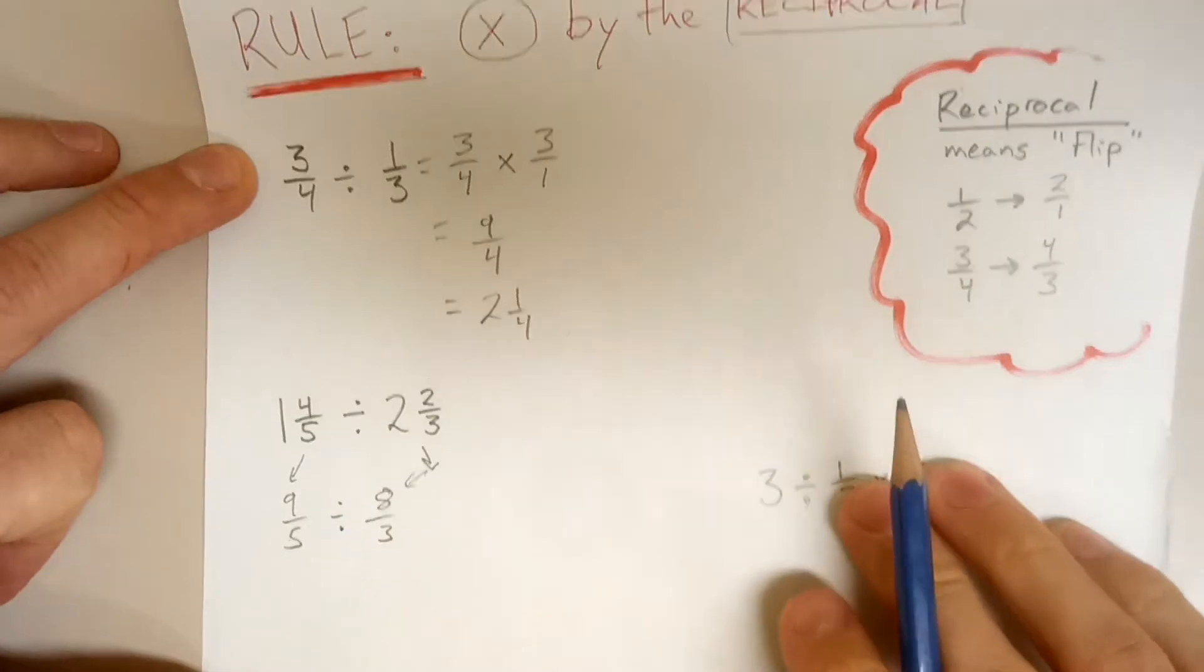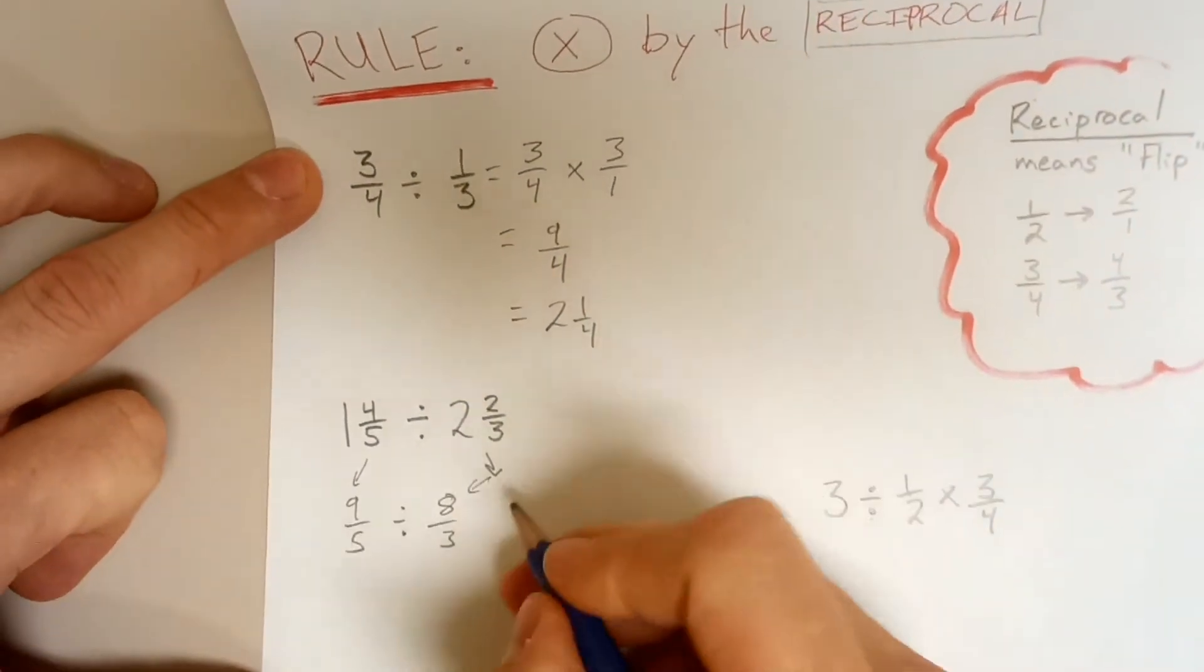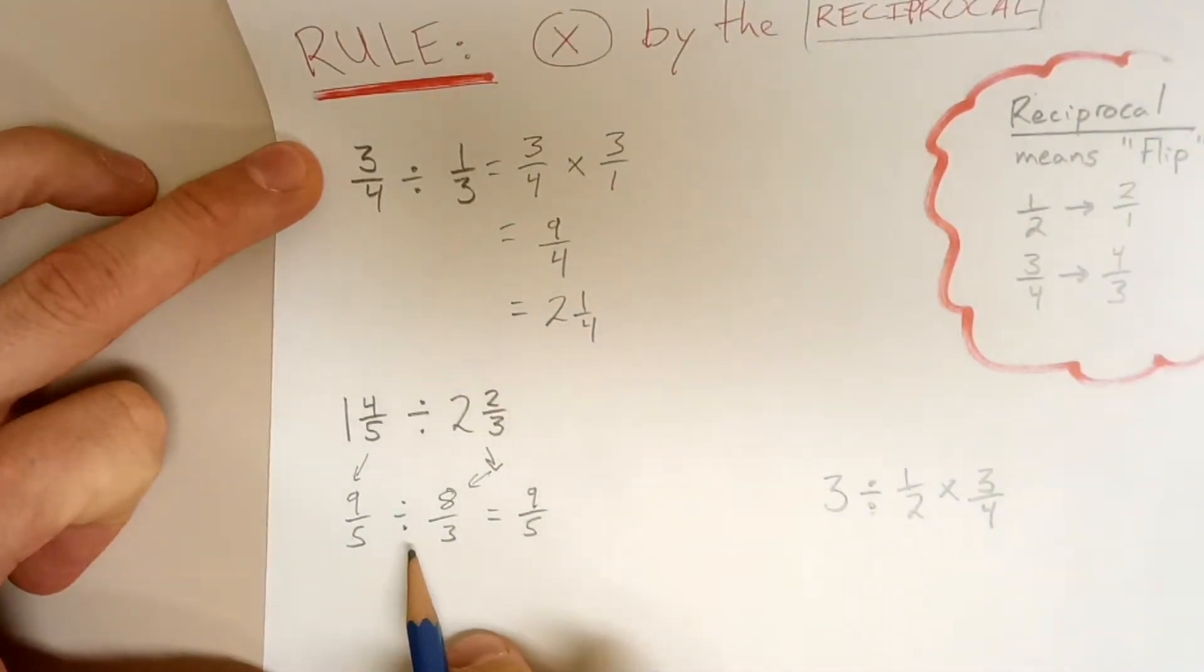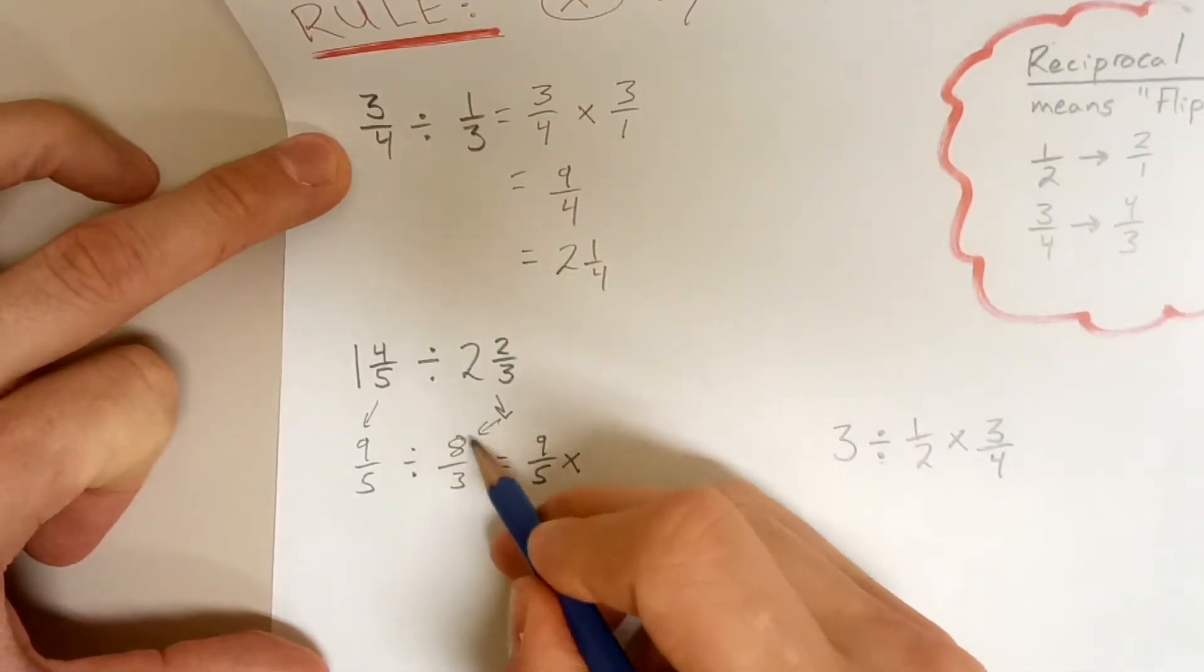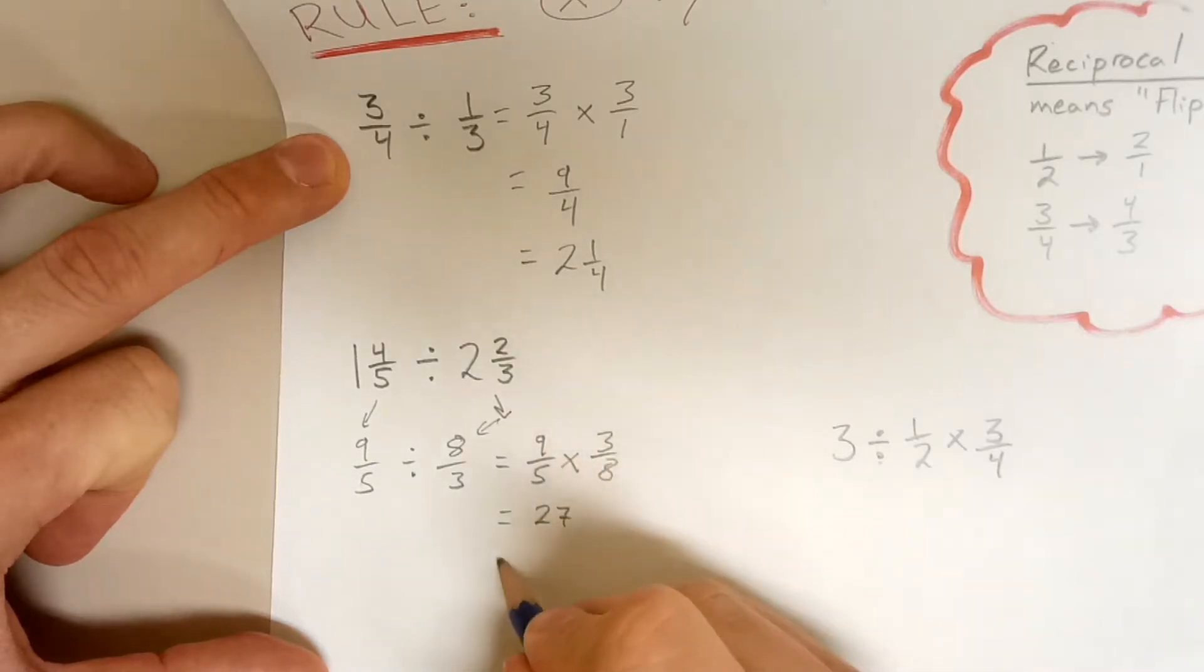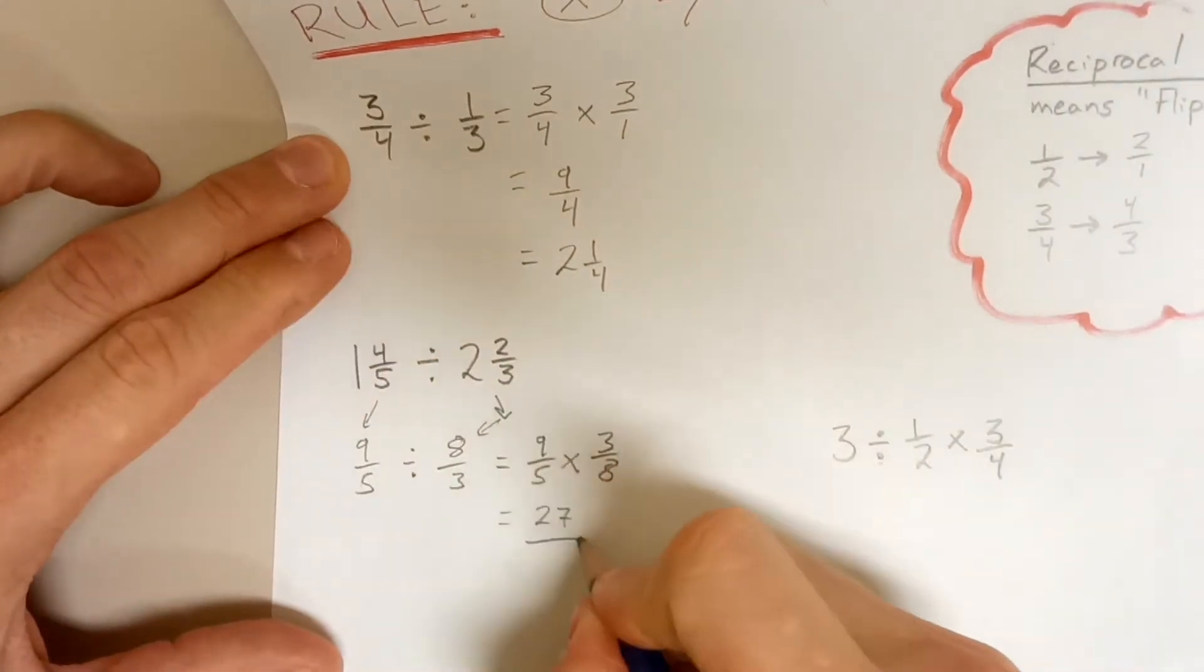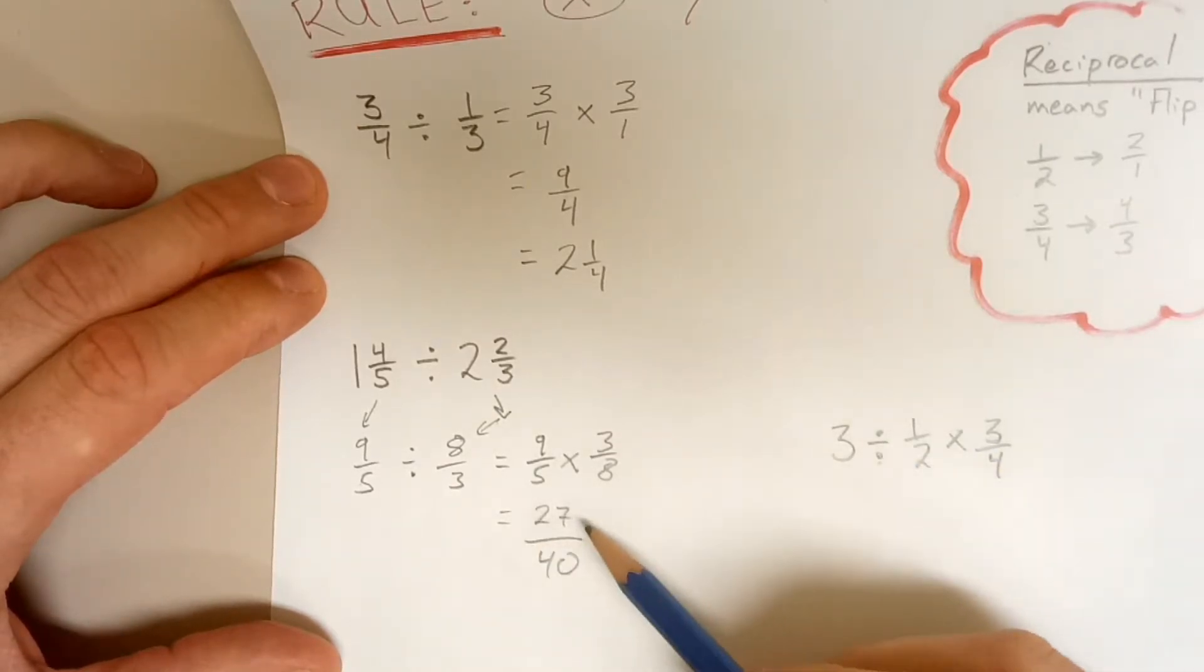Okay, now we go to our division rule, which is multiply by the reciprocal. So first term stays the same. Instead of dividing we're actually going to multiply, but that means we need to change this to the reciprocal. So multiply the tops, multiply the bottoms, we get 27 over 40 for that. If you can simplify it or convert to a mixed number, do so.